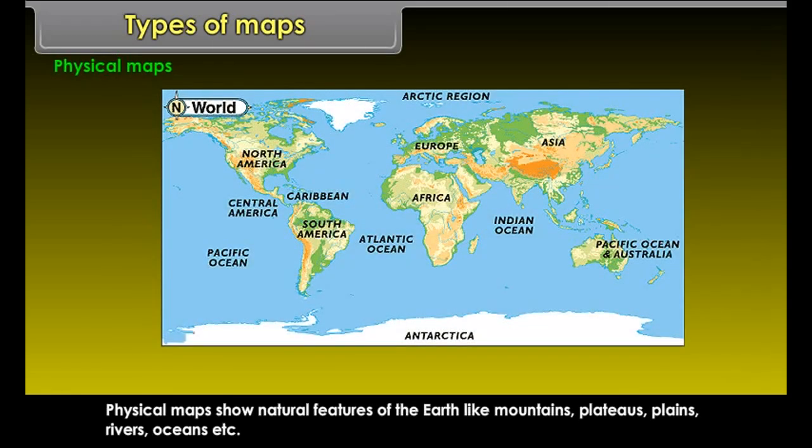Types of Maps. Maps are of different types: Physical Maps, Political Maps, and Thematic Maps.